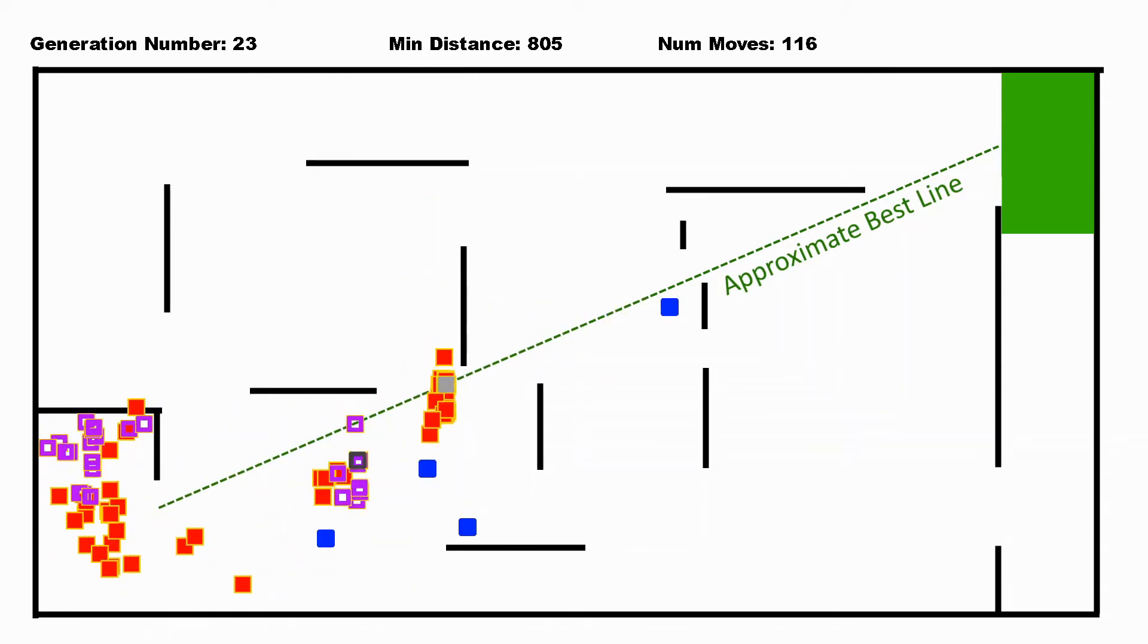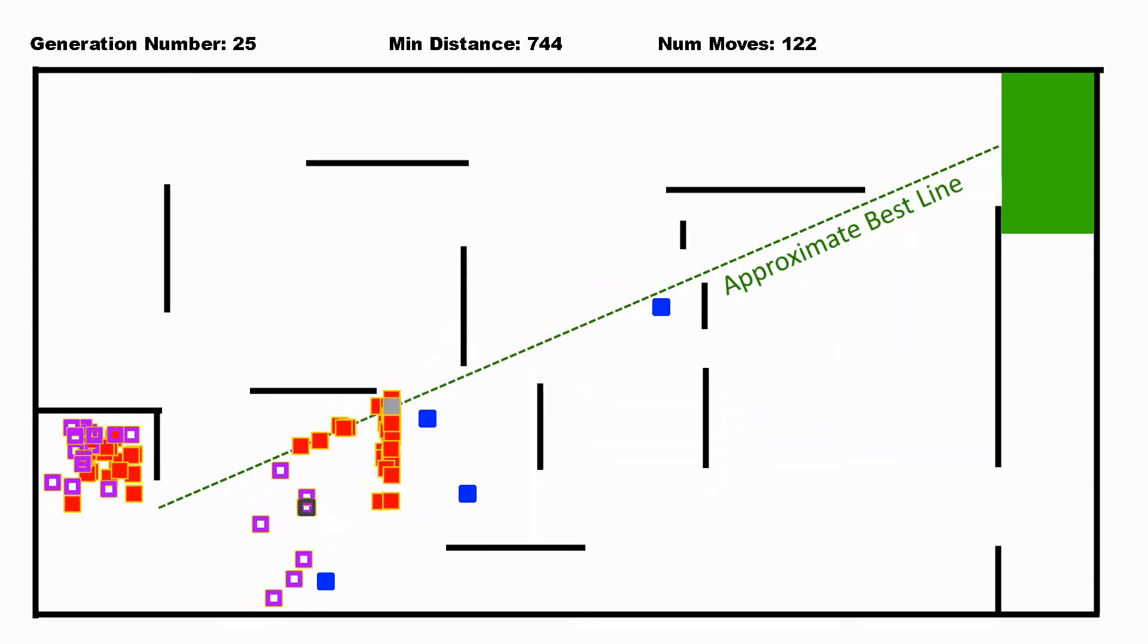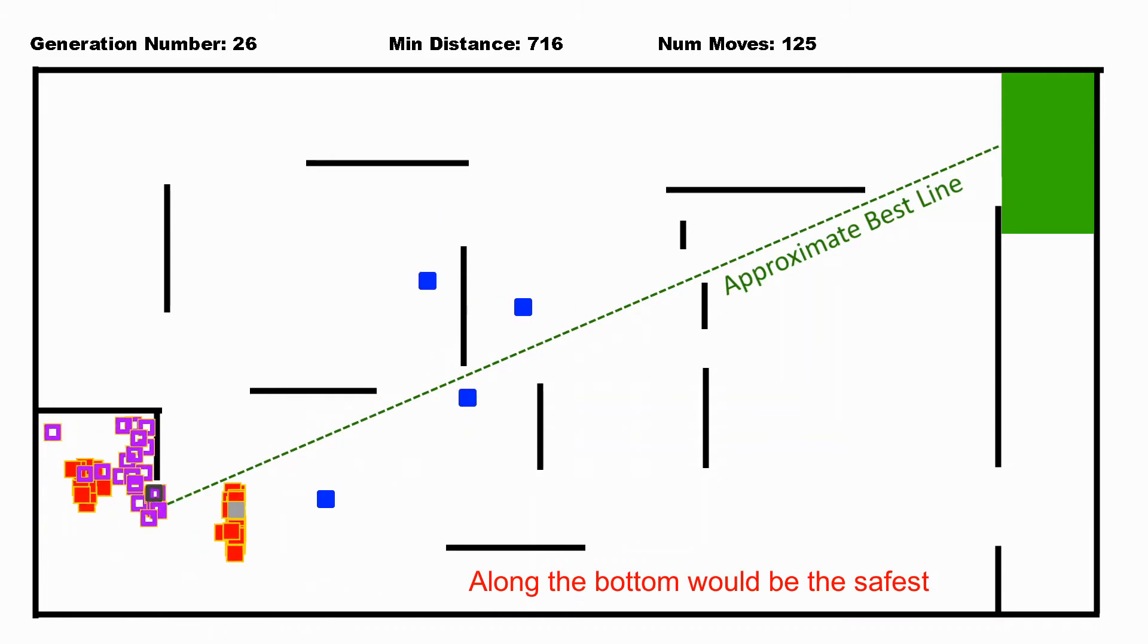Usually this green line is the straightest line. That's the one that has the shortest distance for them to cover, but it also has the most obstacles in the way.